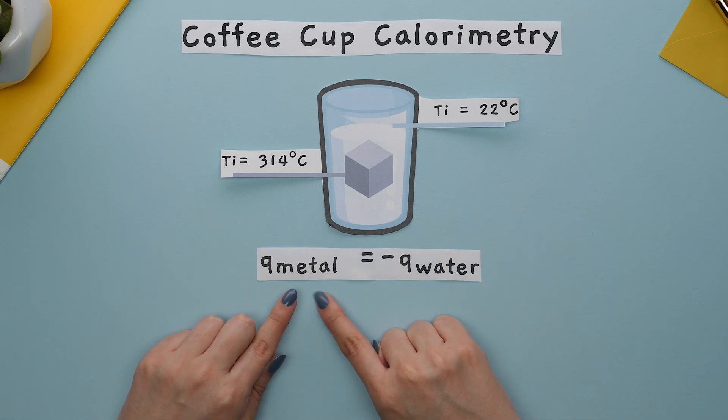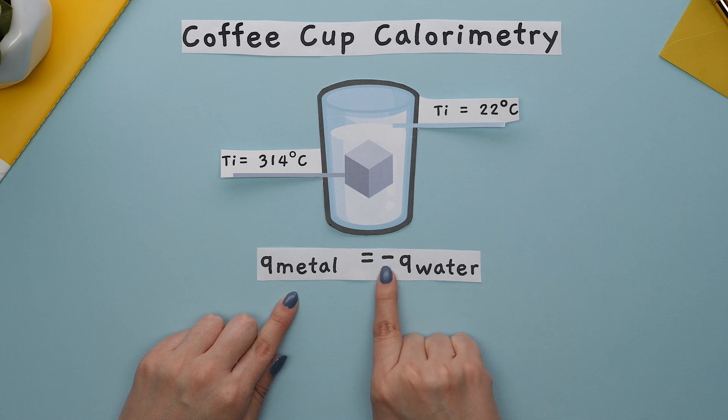There is a specific formula for this type of question, where the heat lost from the metal is equal to the heat gained from the water, and there is a negative sign in front, where Q refers to heat.